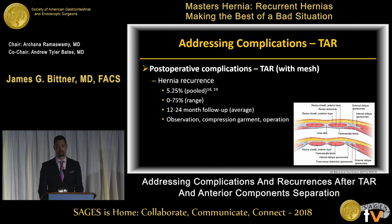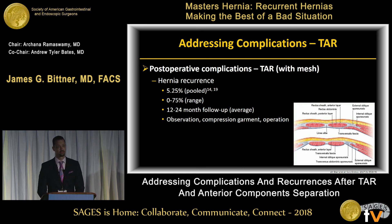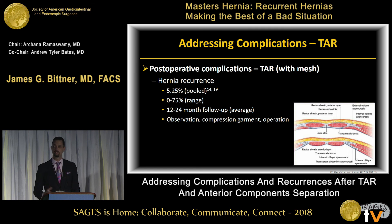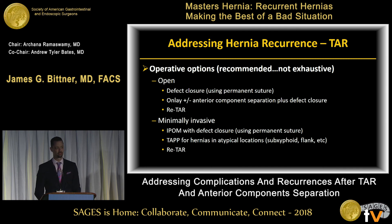Hernia recurrence after TAR poses a significant challenge. A recent systematic analysis showed a pooled hernia recurrence rate of about 5.25%, but some papers range from nearly 0% to 75%. Follow-up is not yet lengthy, so we don't know what 10-year data look like in a statistically meaningful way. How do you manage recurrences after TAR? All prehabilitation rules still apply. You can choose to do nothing, provide a binder, or reoperate.